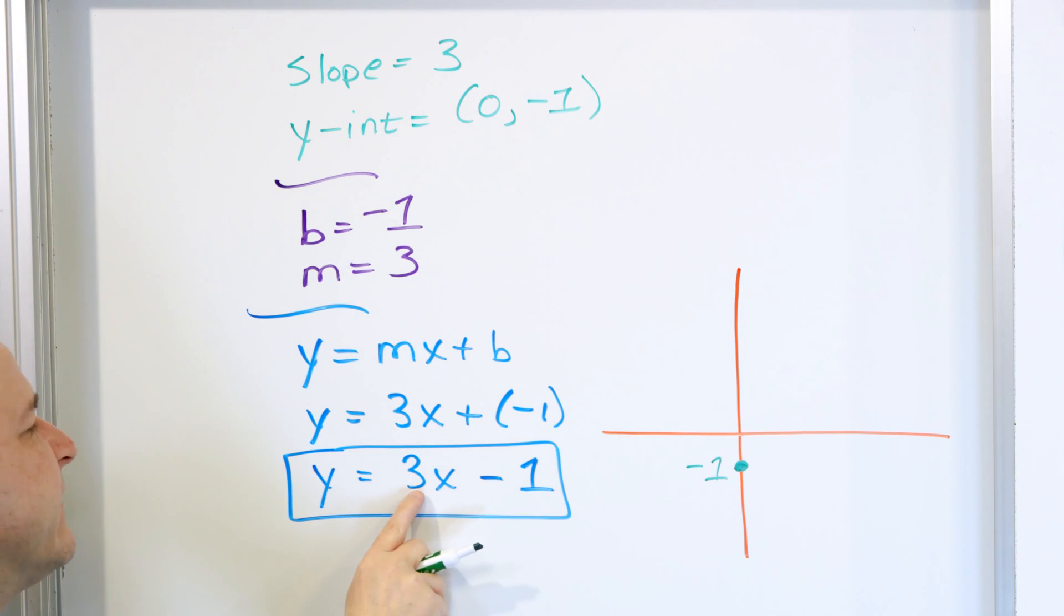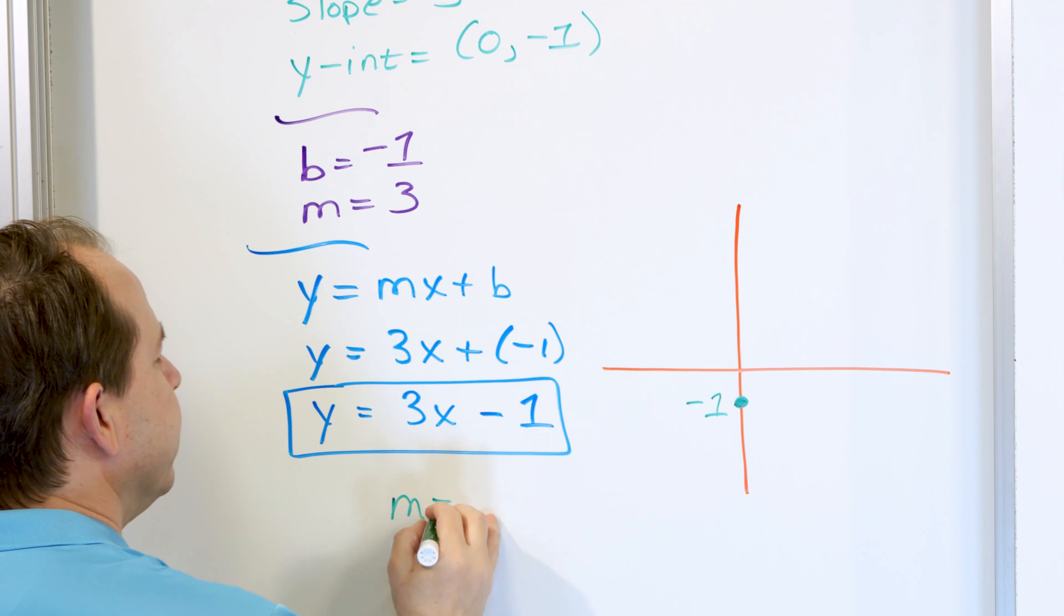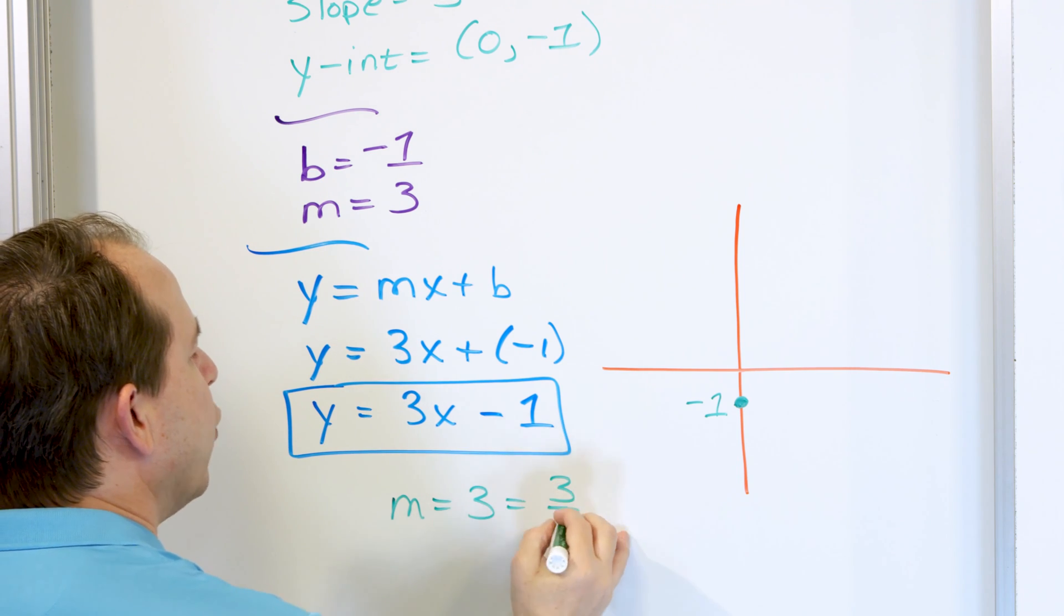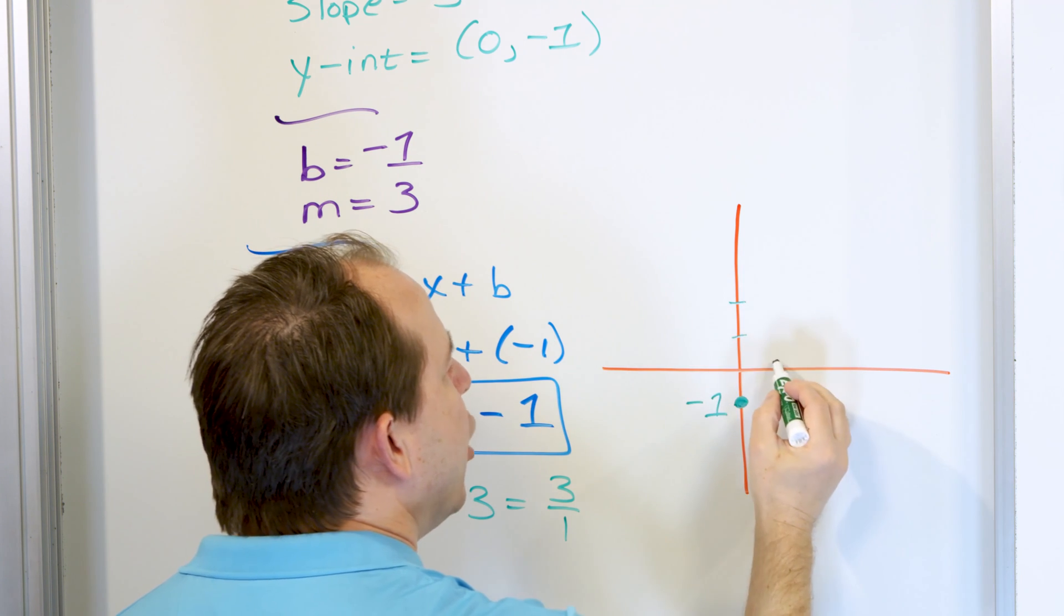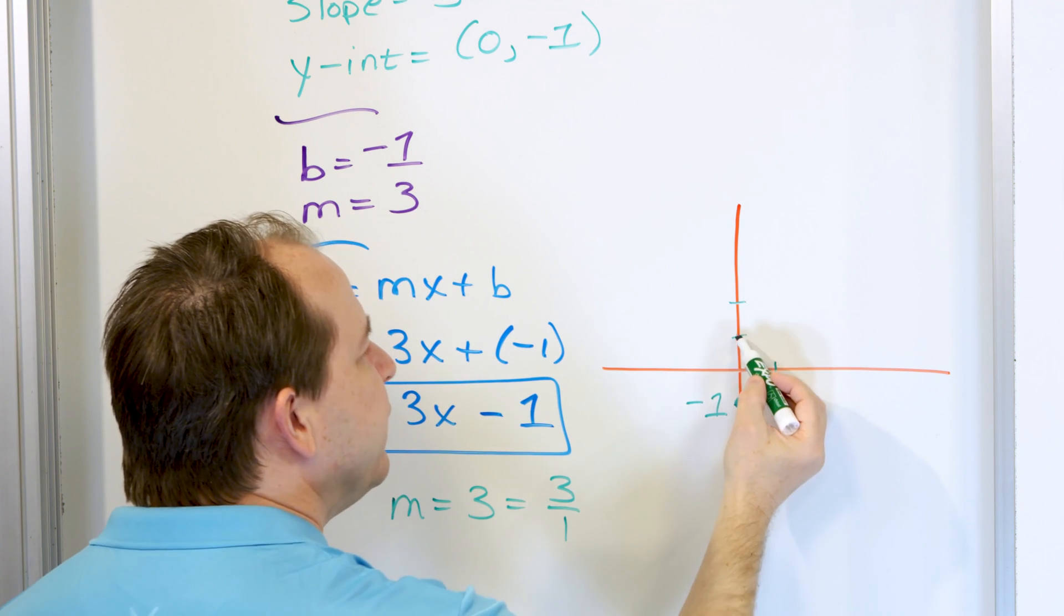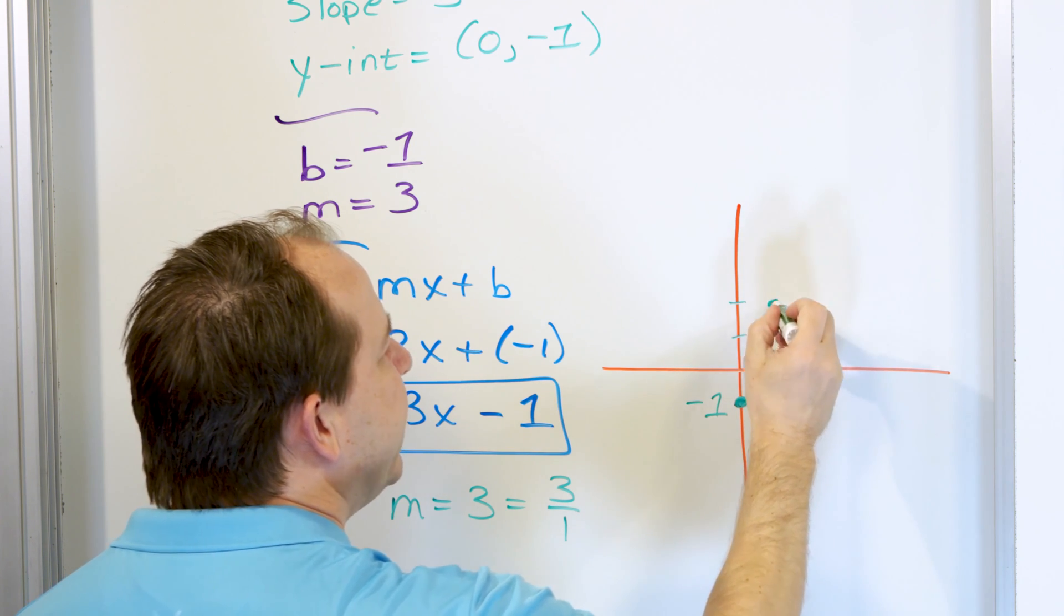And then the slope is positive 3, right? So that means up 3 over 1. So the slope is 3, which is basically 3 over 1. Up 3 over 1. So that means 1, 2, 3 over 1. So from here we go up 1, 2, 3, and then over 1. The next point on the line would be basically right here. Up 3 and then over 1.